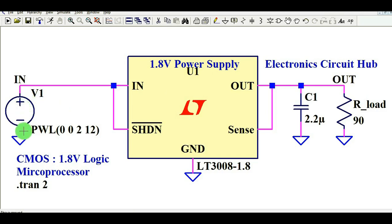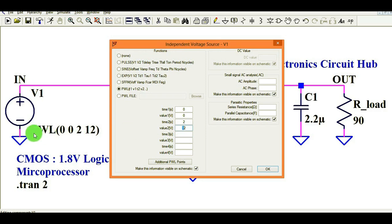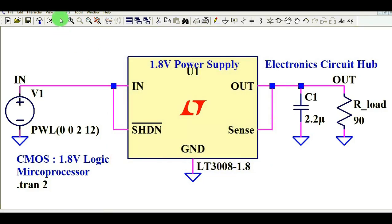Now let me show you how to generate a PWL signal. PWL is a kind of ramp signal. If you right-click on the voltage source, you can select PWL. The time is initially 0 and voltage is initially 0. At time T equals 2 seconds, the output becomes 12 volts — so it ramps linearly from 0V to 12V. I'll show you how this PWL waveform looks.